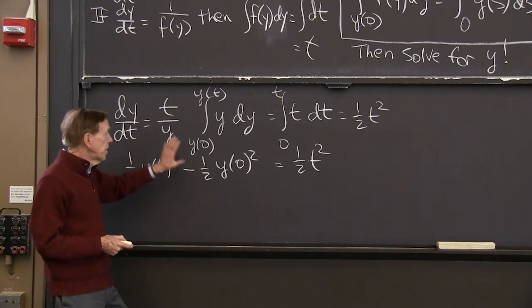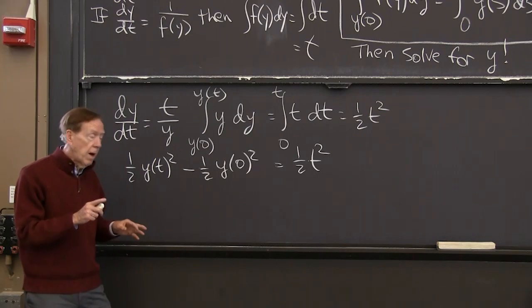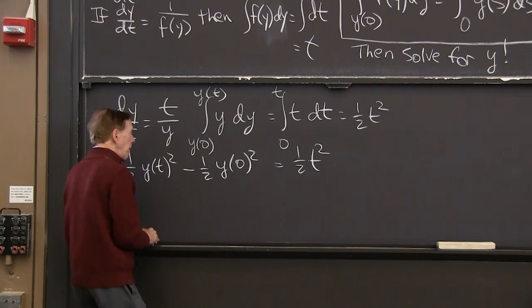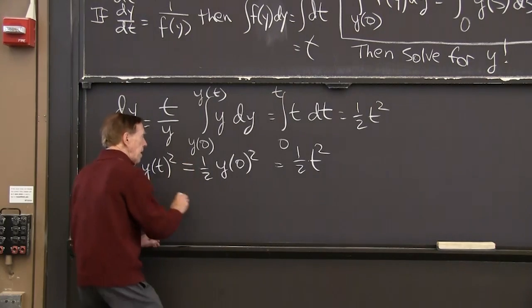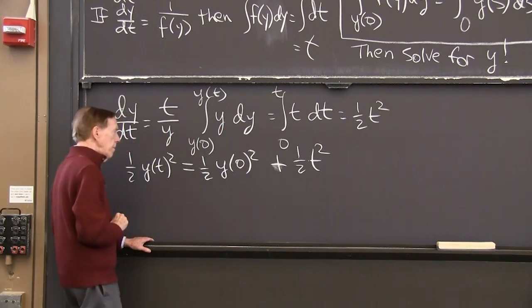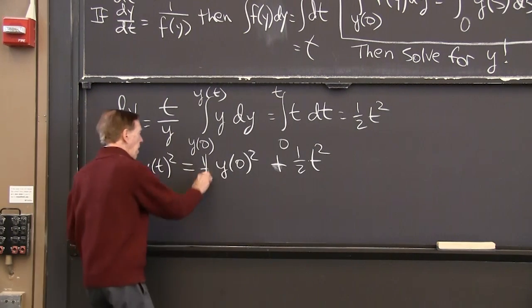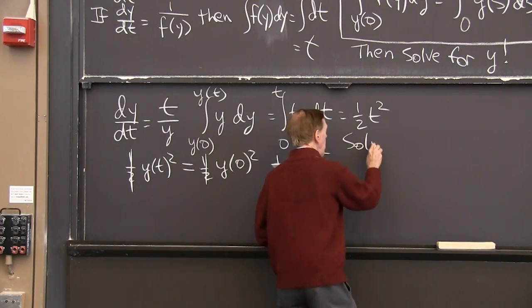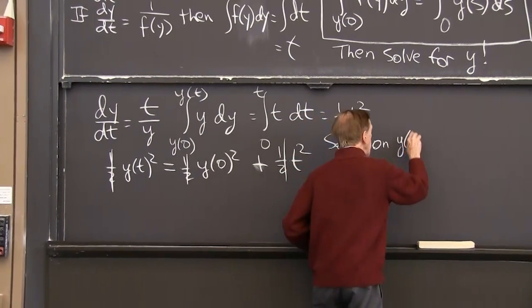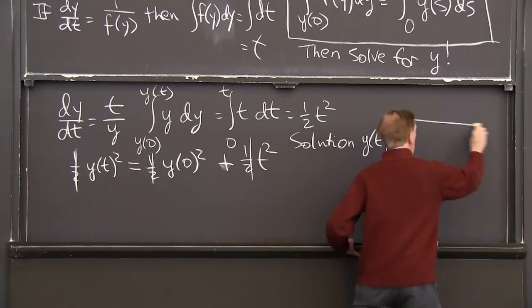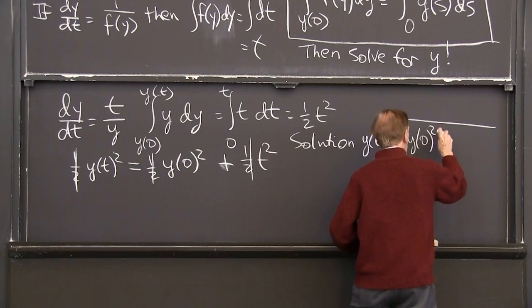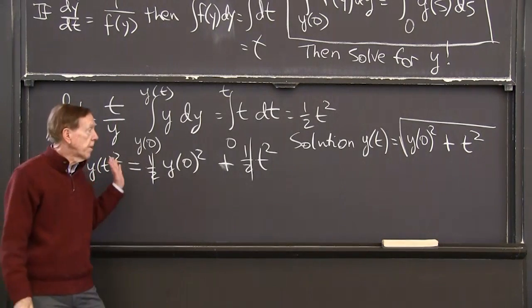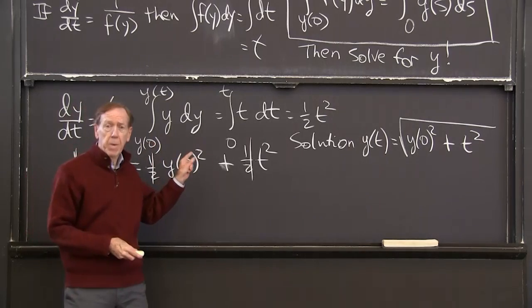The differential equation, that differential equation is solved. But I haven't found it in the form y of t equals something. So, but I can do that. I just move this to the other side. So that will go to the other side with a plus, right? OK. And then I'll cancel the half. And then I'll take the square root. So the solution y of t is the square root of y of 0 squared plus t squared. Now, that's the solution to the differential equation.